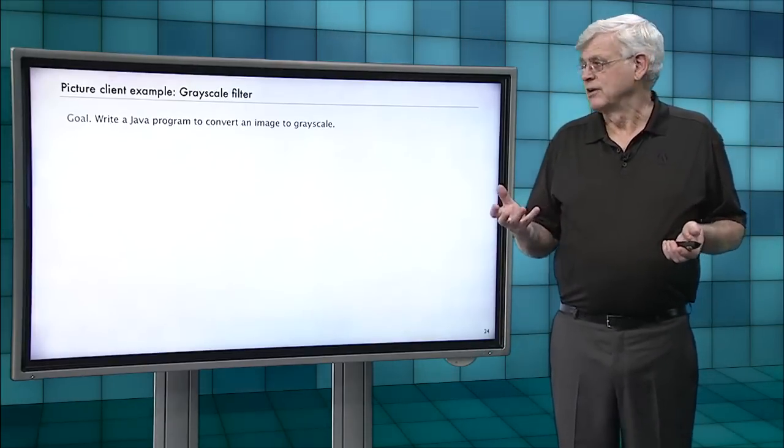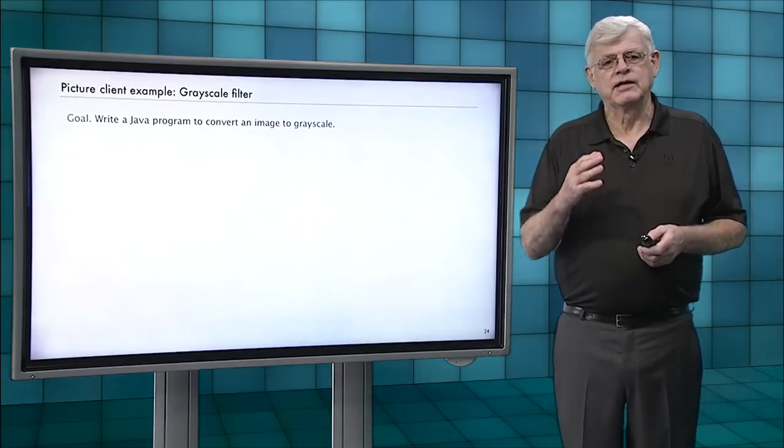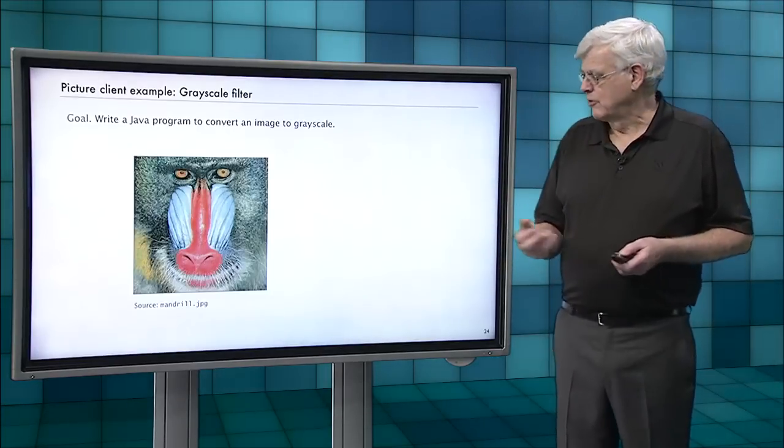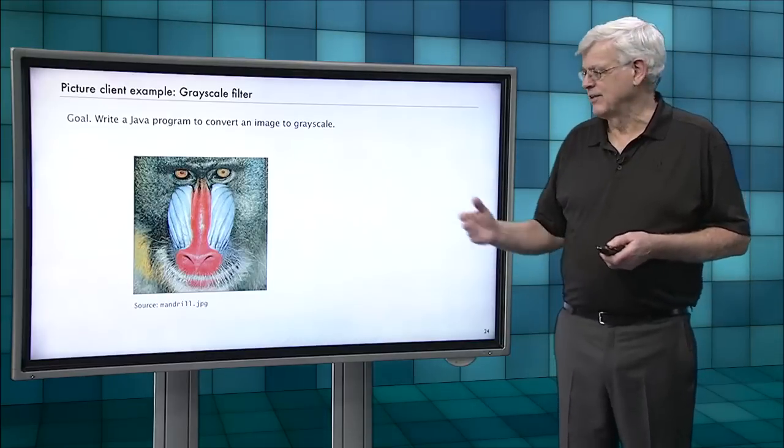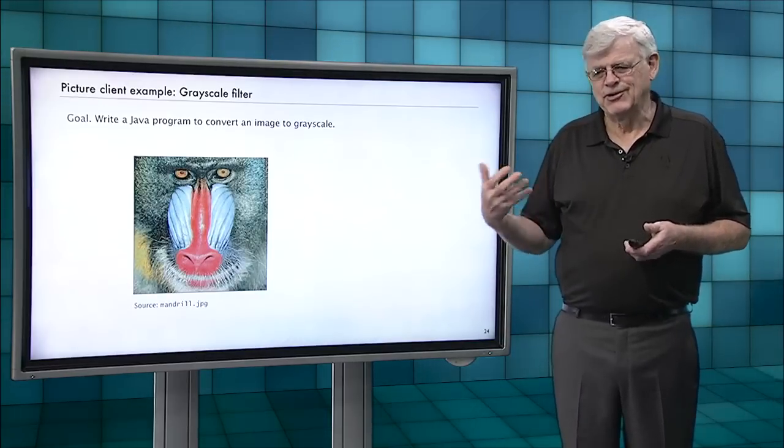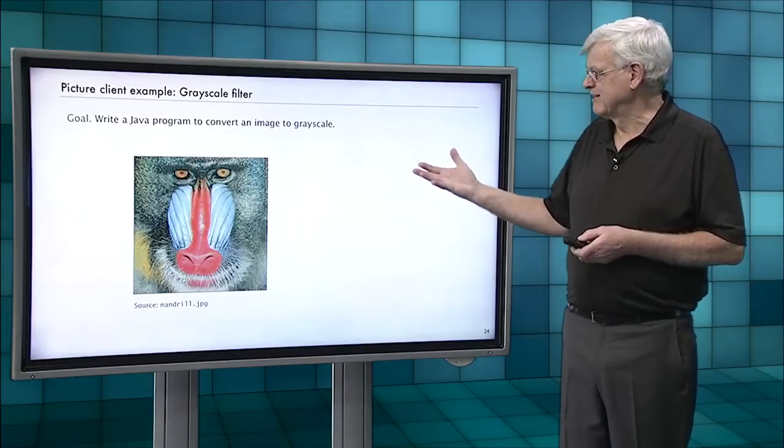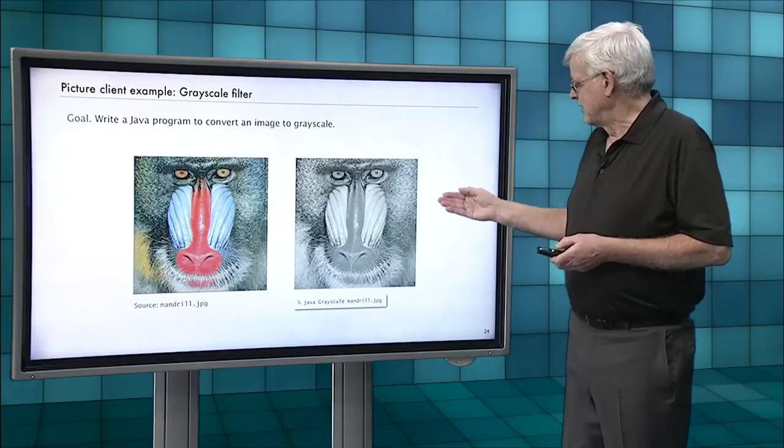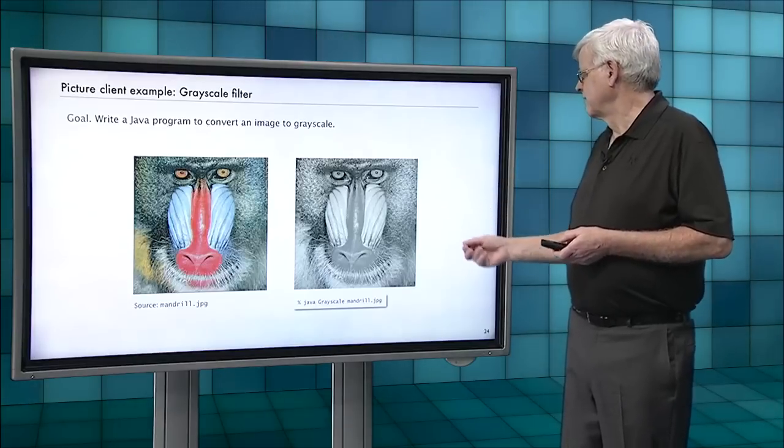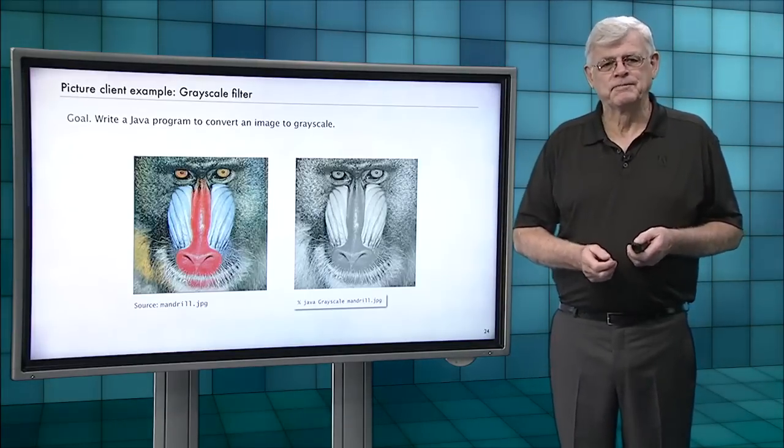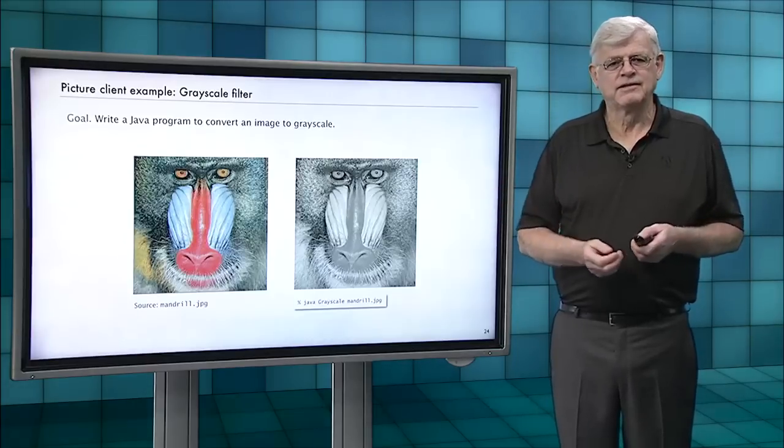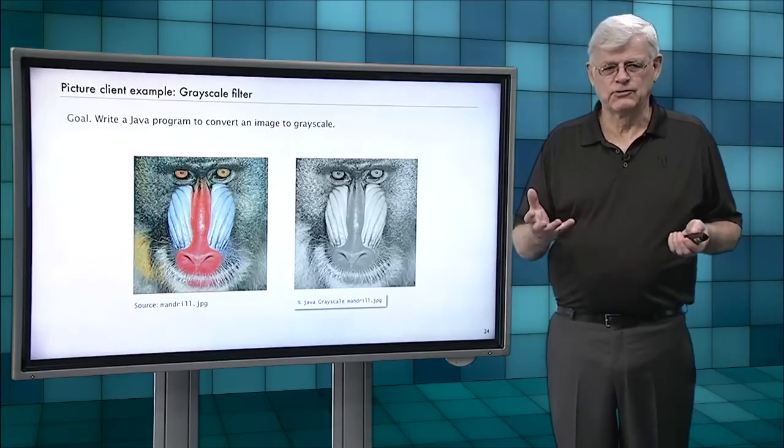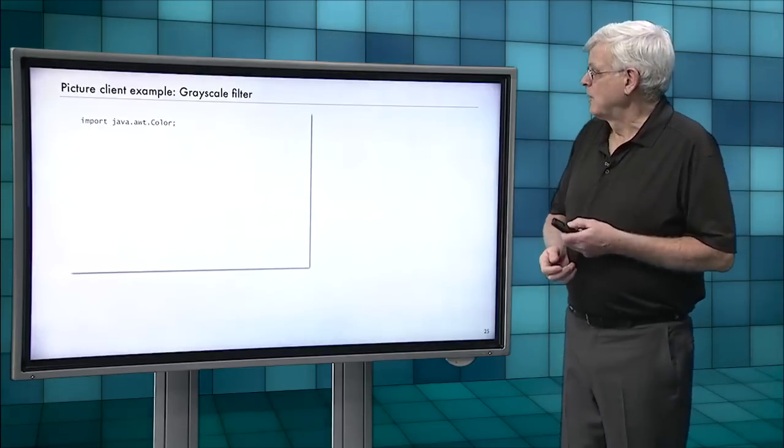So here's an example we're going to do - write a Java program that'll convert an image to a gray scale. So if we take our mandrel, and this image, by the way, is a standard image that's been used for many decades in computer graphics. If you type Java grayscale and give that file name, then it'll give this black and white version. Interesting computation, so you can make black and white versions of photos that you take on your phone yourself if you want.